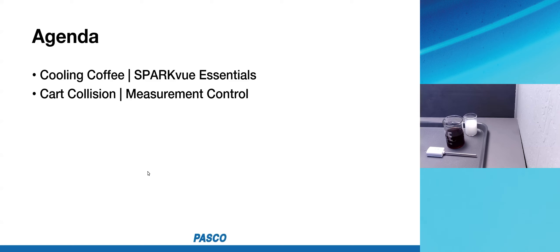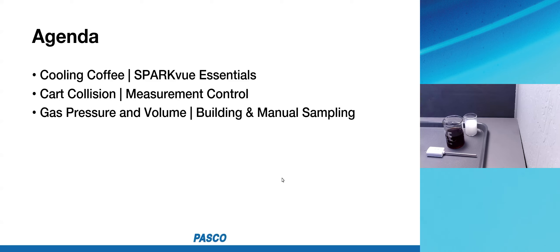Then we're going to jump to a slightly more advanced topic where we'll take control over measurements from sensors — investigating a cart colliding with a barrier in a very short span of time. We'll see what we might want to do for experiments requiring very slow or very fast sampling. Finally, we'll investigate the relationship between gas pressure and volume of a confined gas, build our own labs, and learn manual sampling — associating sensor data with real-world data we read off instruments and type in ourselves.